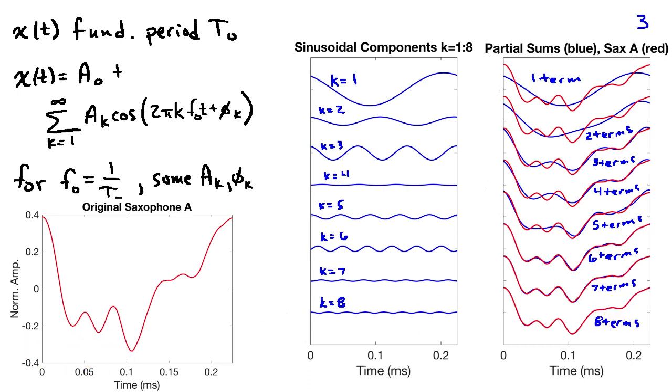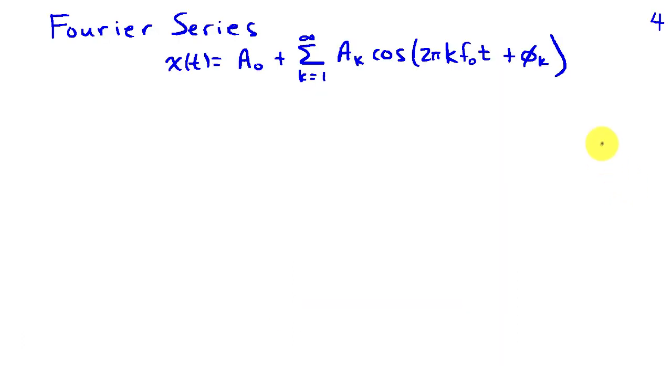So we've taken a fairly complicated signal, and we've shown that you can represent it as a sum of sinusoids with different amplitudes and phases. We can think of these sinusoids as building blocks, Legos, if you will, that we use to construct more complicated signals. And this sum of sinusoids is what we're going to call a Fourier series.